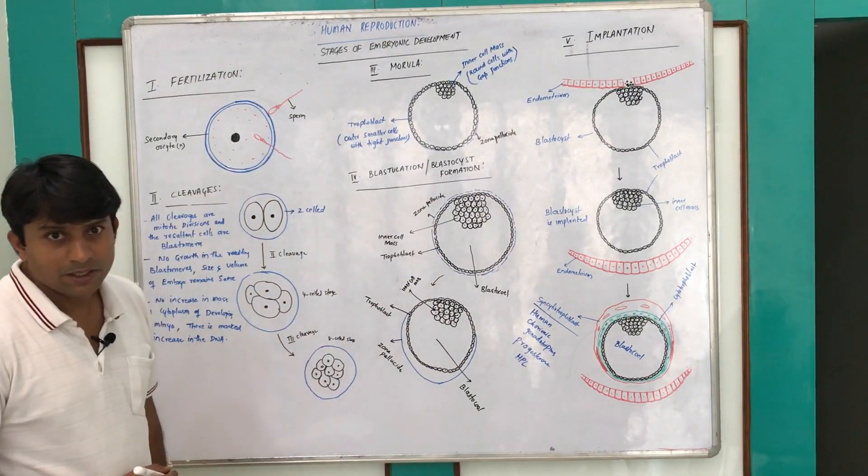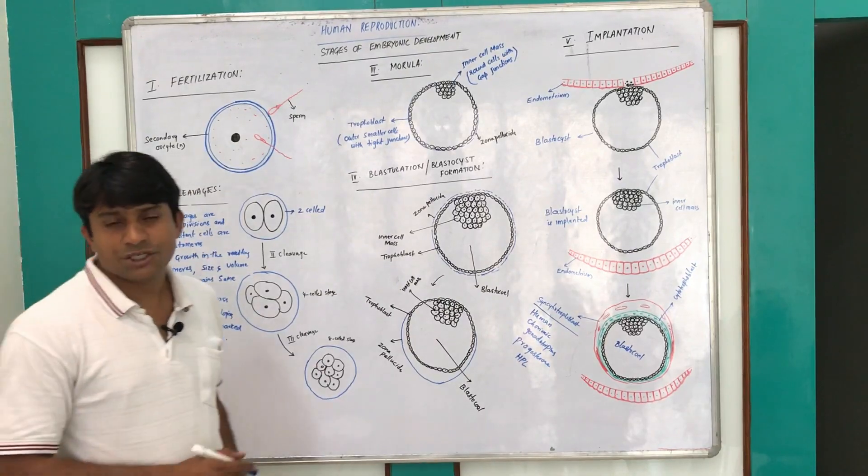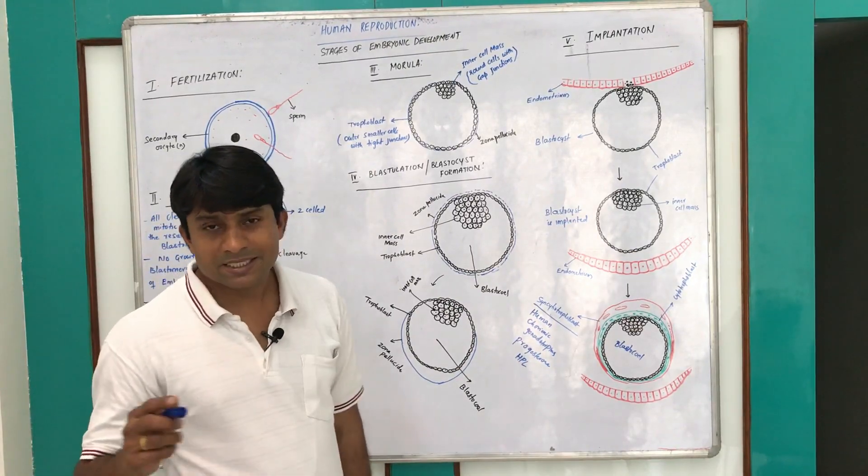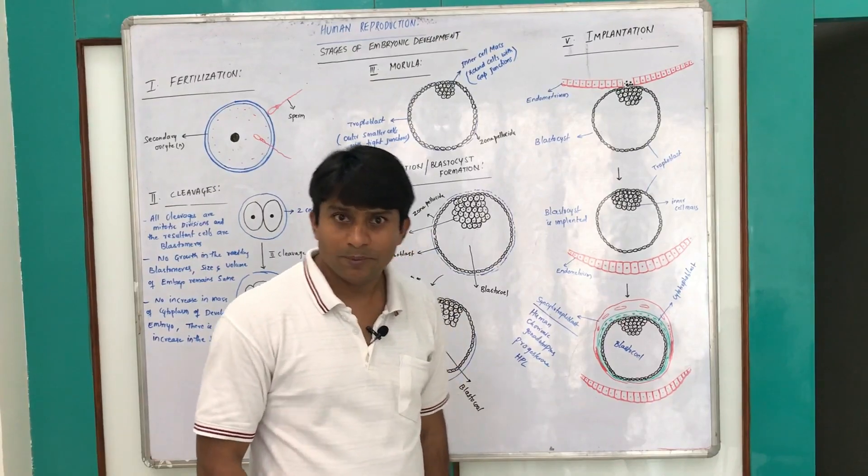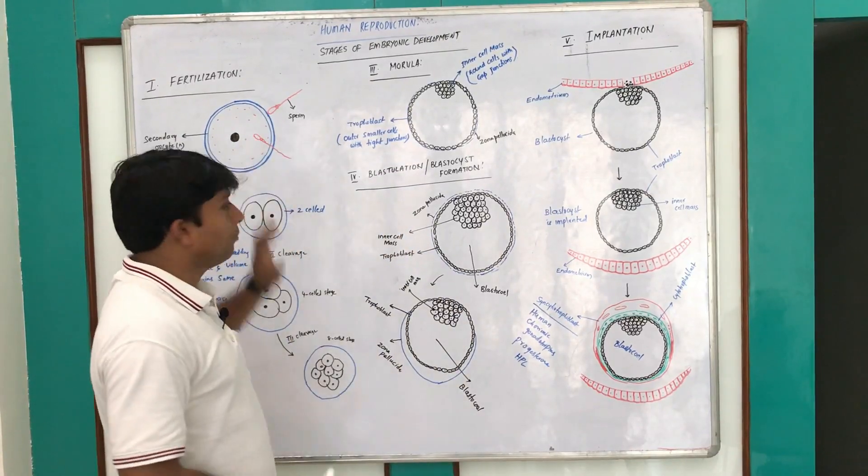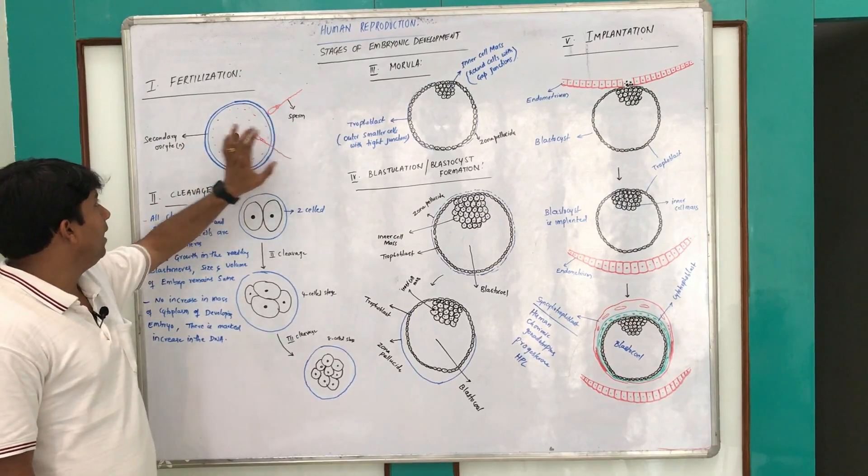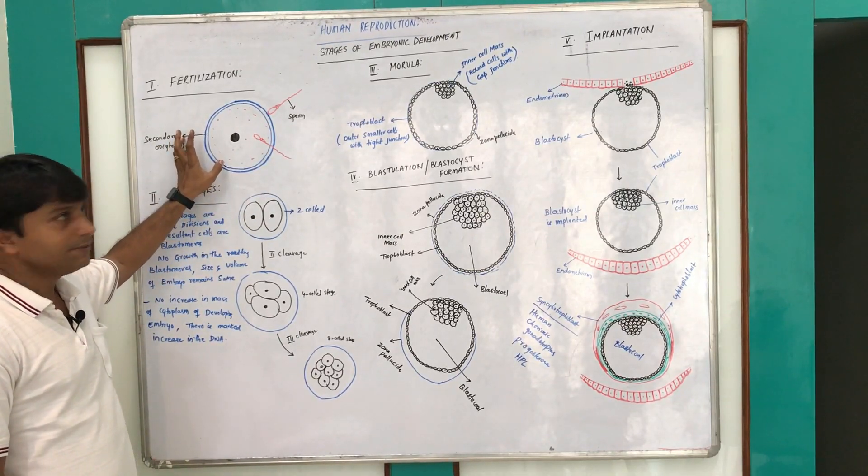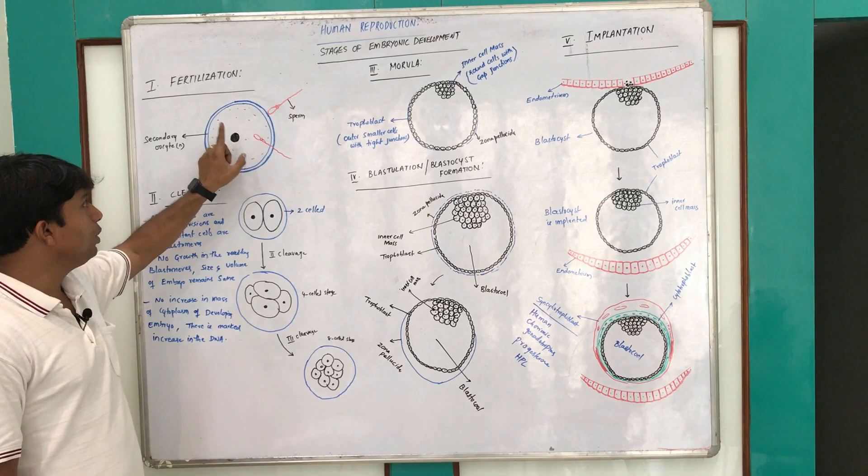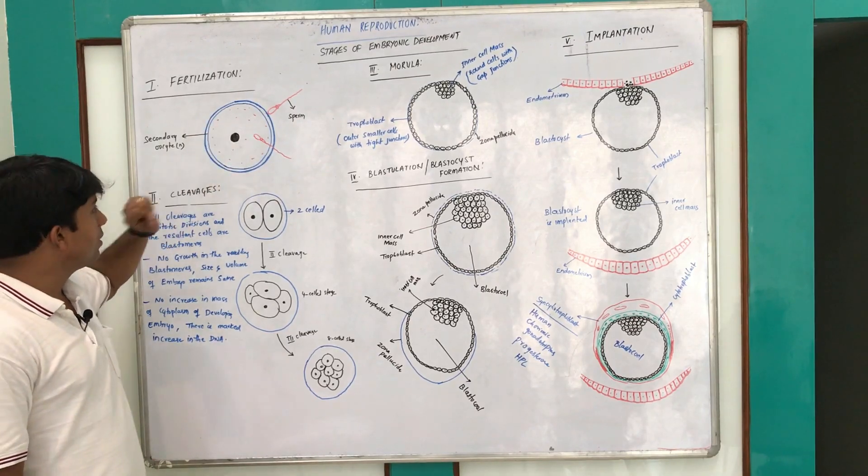The site of fertilization is the ampullary-isthmic junction of the fallopian tube. Fertilization is a process where the union of male and female gametes takes place and their pronuclei fuse, which results in the formation of a zygote which is diploid.